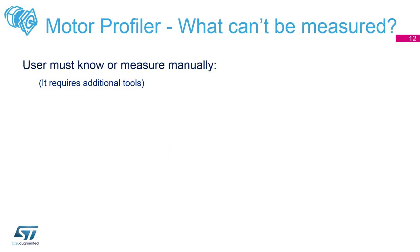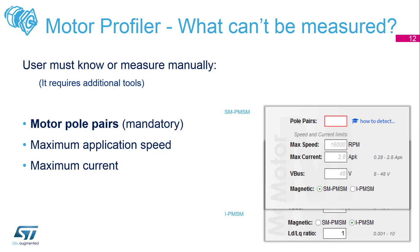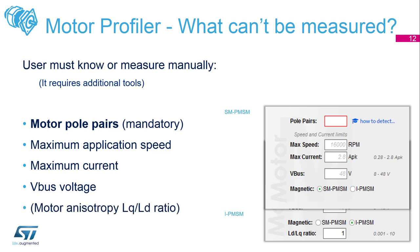The tool can do most things, but certain things must be done manually. The number of pole pairs is one — the tool can't automatically figure that out. We also need to know the maximum speed, because the tool can't determine that limit and could damage the motor if it exceeds the maximum rating. We also need to specify the current, as too much could damage the windings. The V-bus voltage the tool can work out, so we'll leave that blank, and the ratio we'll leave as one.